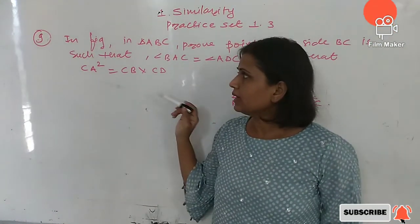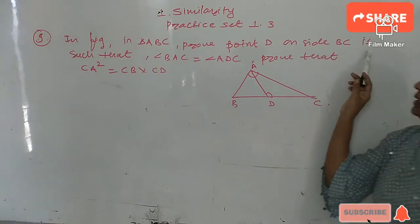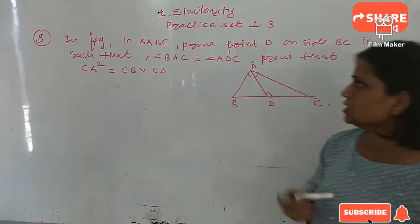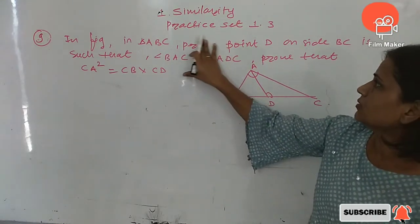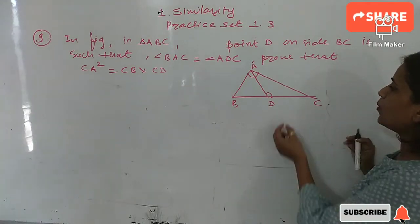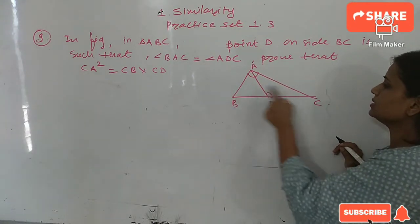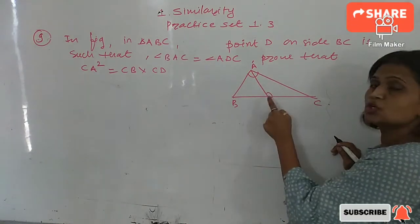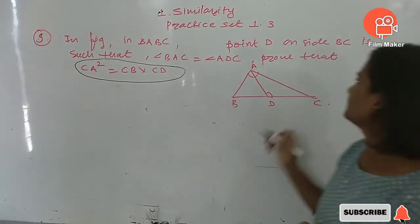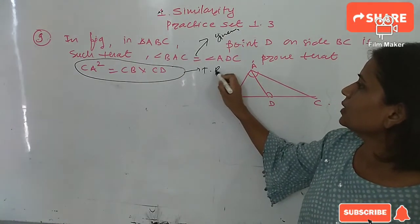Question number 9: In figure, in triangle ABC, point D on side BC is such that angle BAC is equal to angle ADC. Prove that CA square is equal to CB into CD. This is the given — angle BAC is equal to angle ADC — and this is what we have to prove.